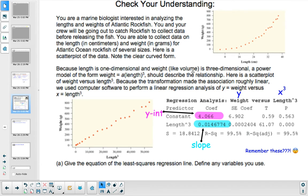Length is one-dimensional and weight, like volume, is three-dimensional. A power model of the form weight equals a constant times length cubed should describe the relationship. Here's a scatterplot of weight versus length cubed.